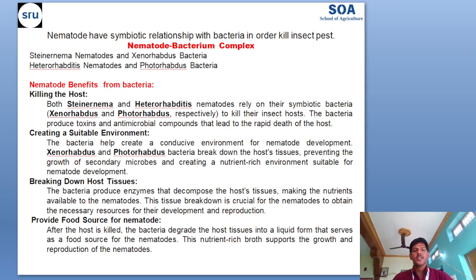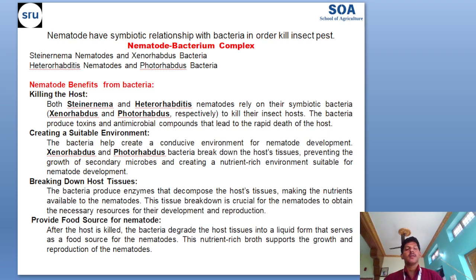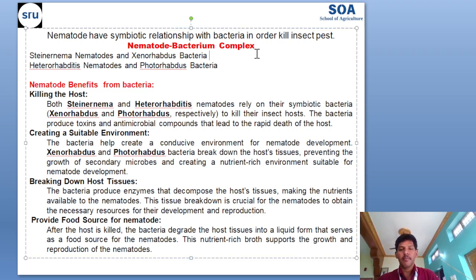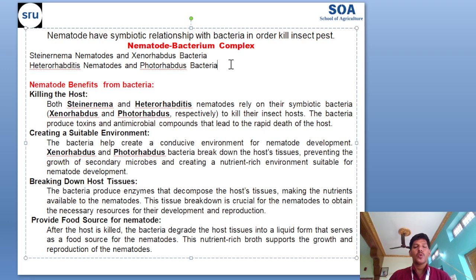Entomopathogenic nematodes have a symbiotic relationship with bacteria, and this symbiotic relationship is compulsory in order to kill insect pests. If there is no symbiotic relationship with the bacterium, then these nematodes are ineffective or useless. For example, Steinernema nematodes are associated with Xenorhabdus bacteria, and Heterorhabditis nematodes are associated with Photorhabdus bacteria.